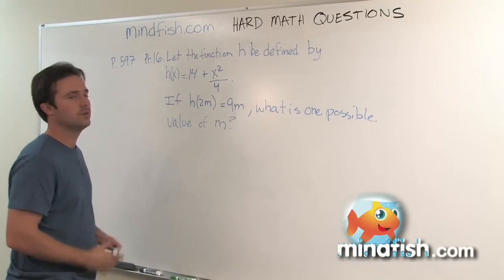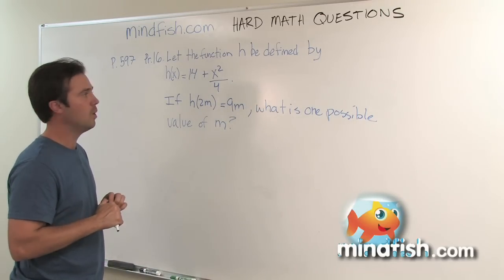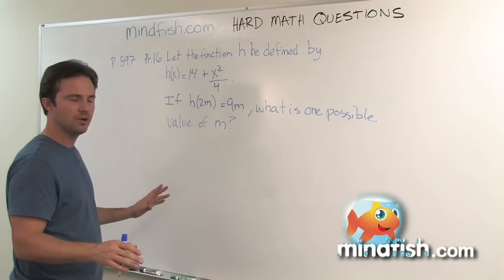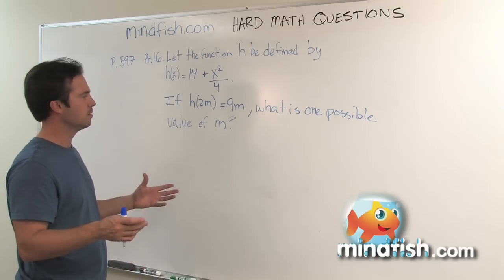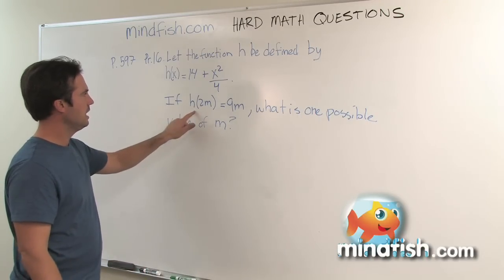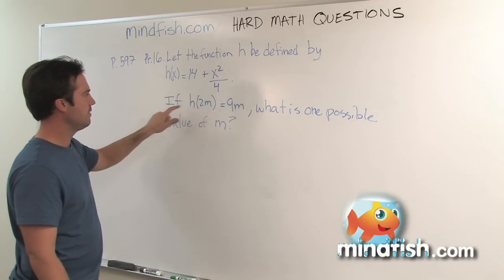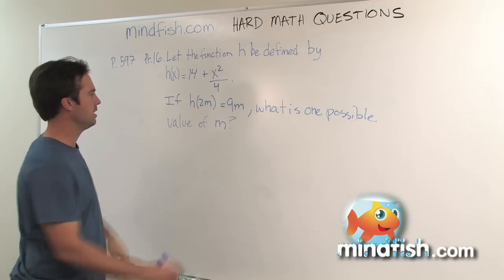So this is an f(x) question, which is really just another way of saying y, but it gives people lots of problems. So I'm going to walk you through it, and hopefully at the end, you'd be able to do something very similar. So it says if h(x) equals 14 plus x squared over 4, and it says if h(2m) equals 9m, what is one possible value of m?